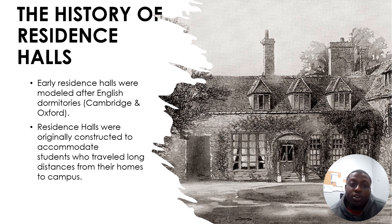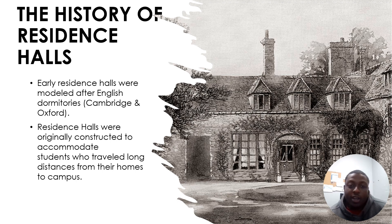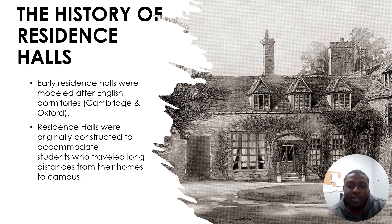So the history of residence halls. Early residence halls are modeled after English dormitories. Two universities in England that made an example of this were Cambridge and Oxford. During this time, the United States wanted to pretty much replicate the educational systems that England held, so they also wanted to copy what they did with the residence halls as well.